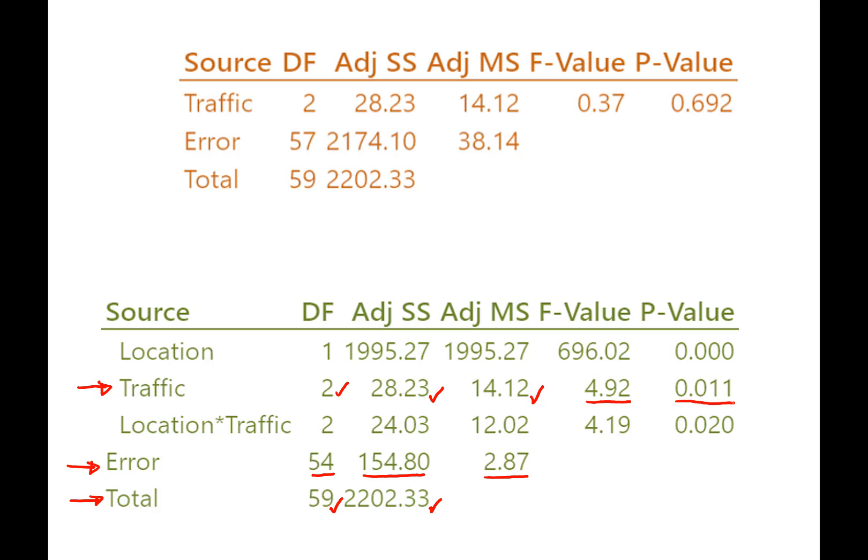Now, remember the error term is just some spread in the data or variability or dispersion in the data that we can't explain by our factors. And so now that we've added some new factors, there's only about 155 left of the 2200 of the sum of squares that we can't explain anymore. Well, let's go up and look at our new factors and maybe that will explain to us why the error line looks different.